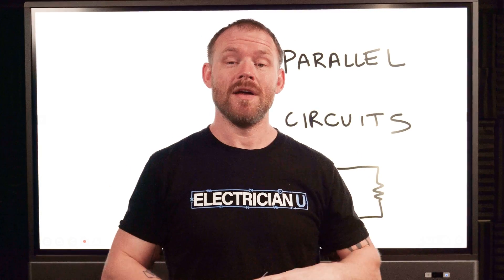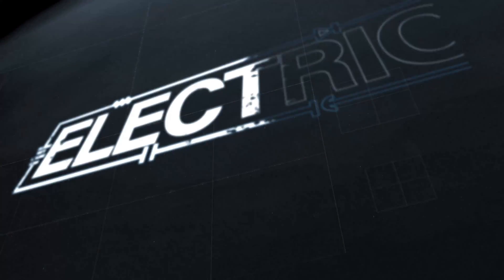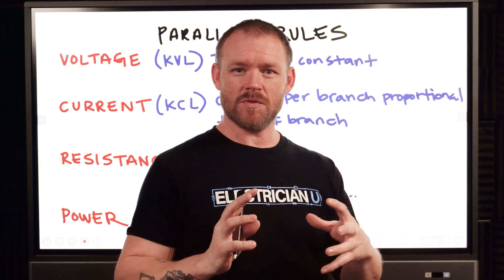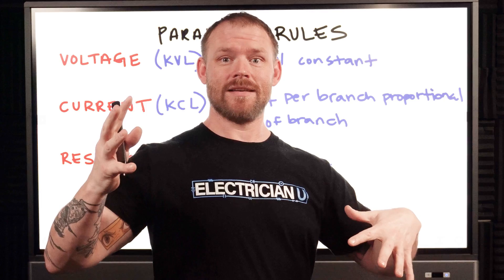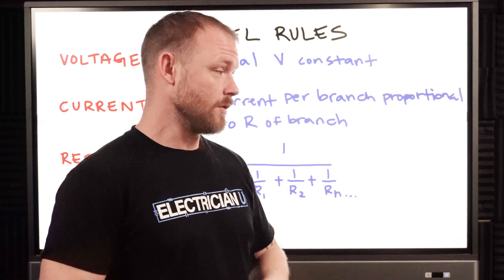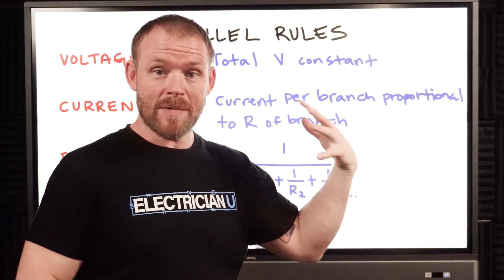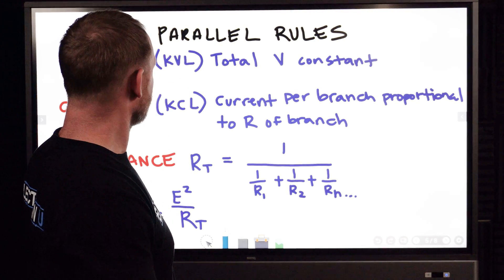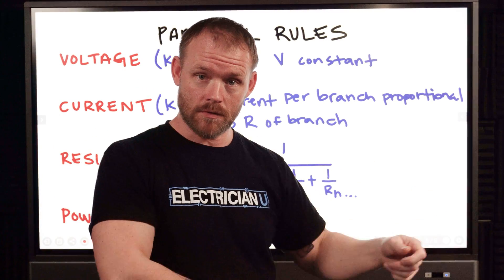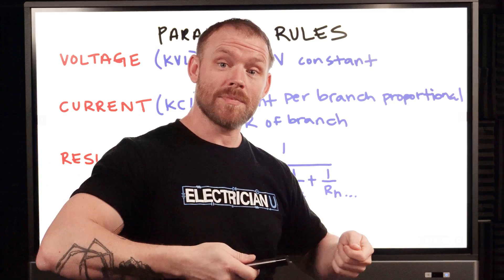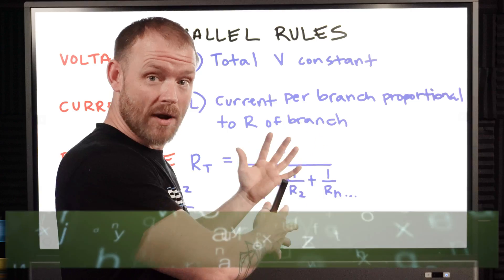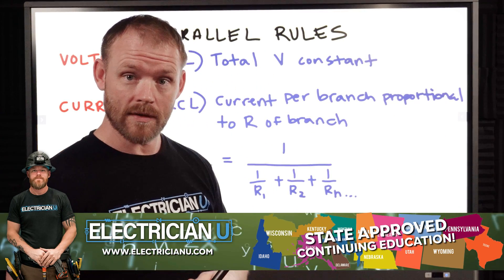In the last video we talked about series circuits. Now let's talk about parallel circuits. Parallel circuits get a little weird because you can't just add all of the resistances together — the total resistance is actually going to be less than any individual resistance. We still have Kirchhoff's Voltage Law and Kirchhoff's Current Law (KVL and KCL), but in a parallel circuit voltage is constant across each resistor, whereas in a series circuit it was current that was constant.